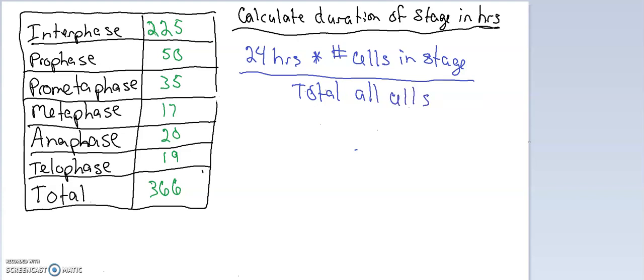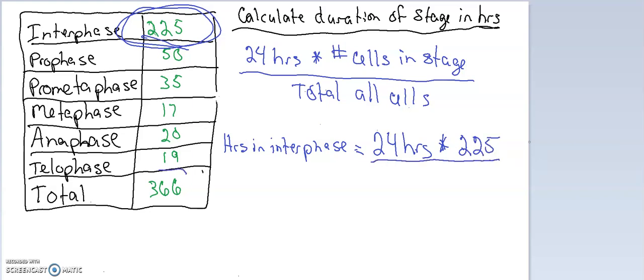So if we do one example here, let's do interphase. If we want to know hours in interphase, we will take 24 hours times the number that we counted in interphase, which is 225, and then we will divide that by the total of all the cells that were counted, which is 366.